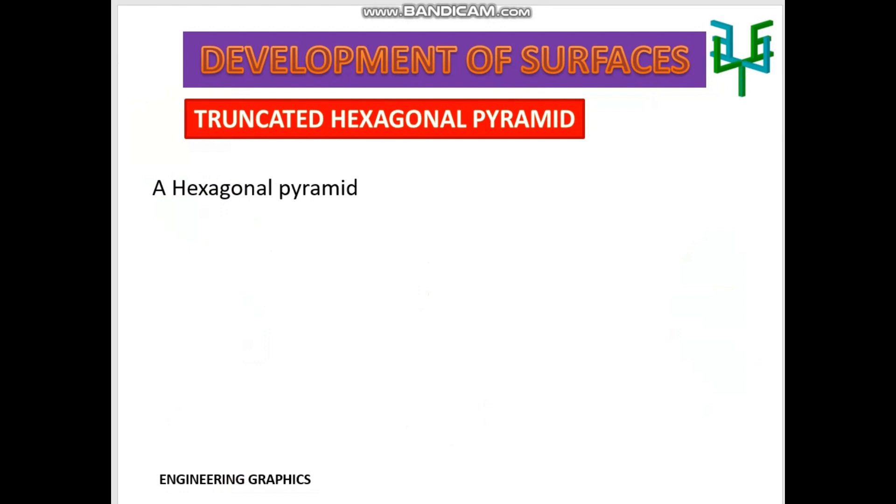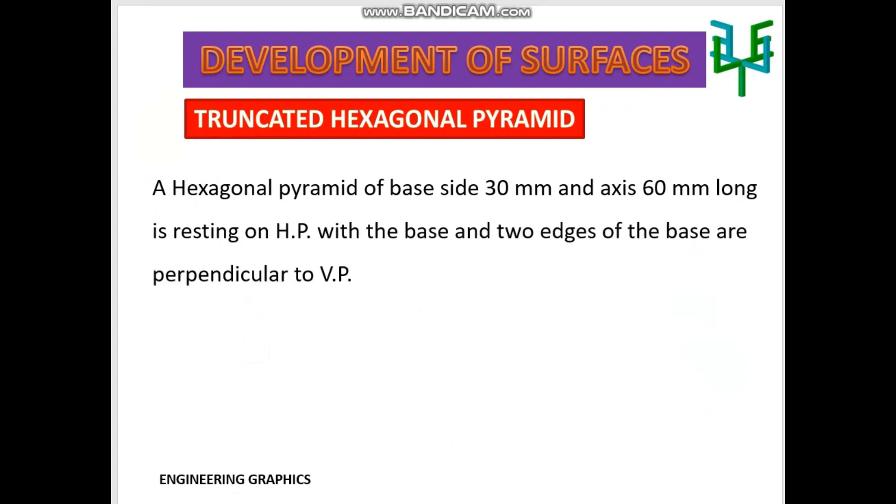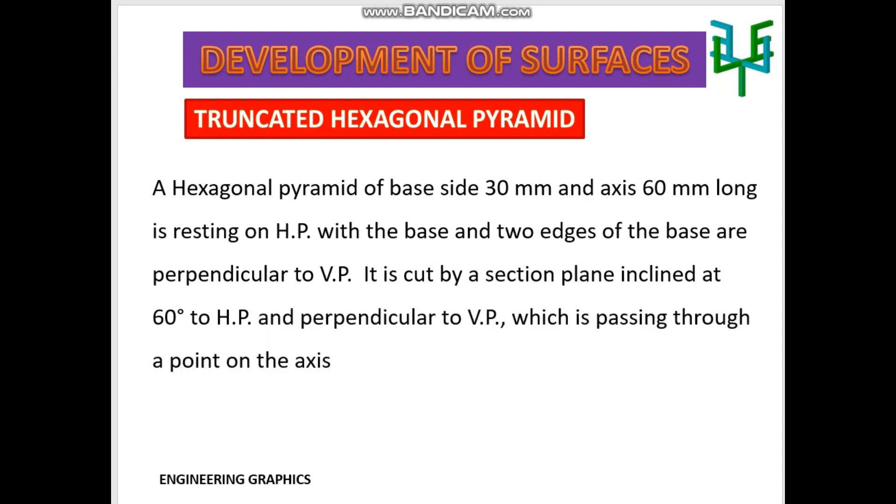A hexagonal pyramid of base side 30 mm and axis 60 mm long is resting on HP with the base, and two edges of the base are perpendicular to VP. It is cut by a sectional plane inclined at 60 degrees to HP and perpendicular to VP, which is passing through a point on the axis 20 mm from the base. Draw the development of lateral surface of the truncated pyramid.